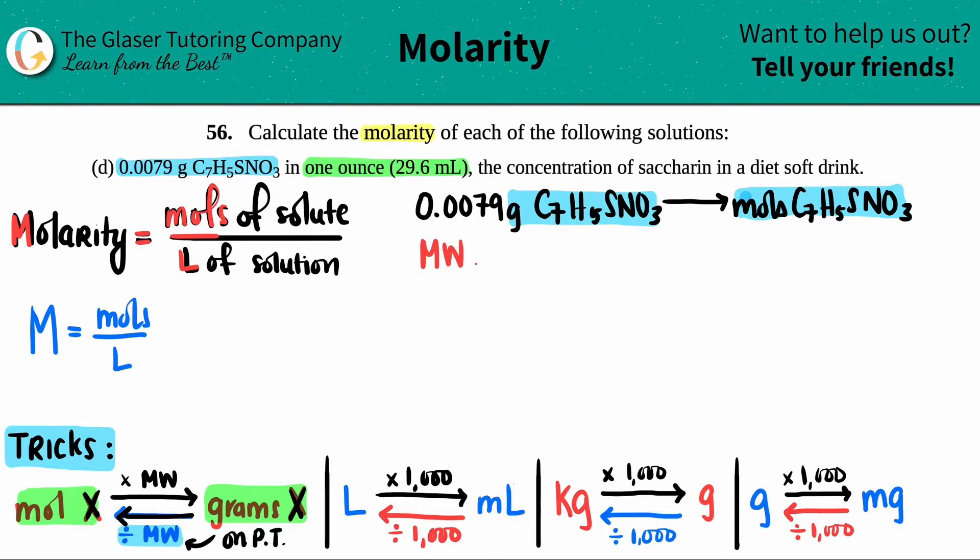C7H5SNO3 - we have to get our periodic tables out. We have to add up the weights of all the carbons, hydrogens, sulfurs, nitrogens, and oxygens. The hardest part is remembering to take into consideration there's seven carbons, five hydrogens, one sulfur, one nitrogen, and three oxygens. You do it on your end - I'll get the exact answer and let's see if we get roughly the same number.